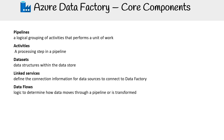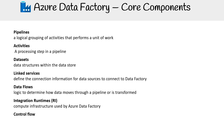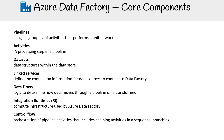Data flows are the logic to determine how data moves through the pipeline and handles transformation and integration. Integration runtimes are the compute infrastructure used by data factory. Control flows handle orchestration of pipeline activities, including chaining activities in a sequence and branching. You should know what control flows and data flows are.